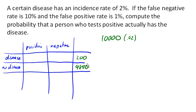Now we have a false negative rate of 10%, and so that tells us that 10% of these 200 are going to incorrectly test negative. Meanwhile, the other 180 will correctly test positive.